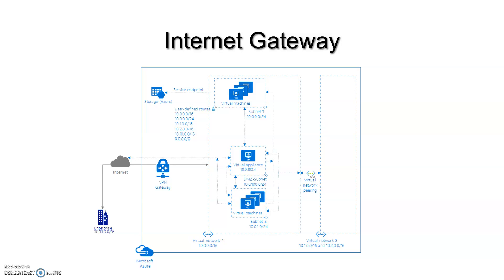Internet Gateway helps you connect to on-premises networks or give public access to your website, enabling smooth inbound and outbound traffic. It's used to connect different networks or expose resources to the public.